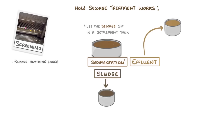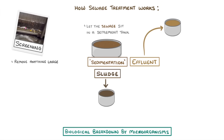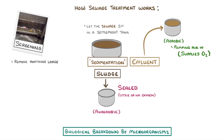The final stage is to break down all of the organic matter, and for that we rely on biological breakdown by microorganisms. The key difference between the two tanks is that the effluent is under aerobic conditions while the sludge is under anaerobic conditions. We can achieve this by pumping air into the effluent tank, which supplies oxygen, but keeping the sludge tank sealed so that there's little or no oxygen.